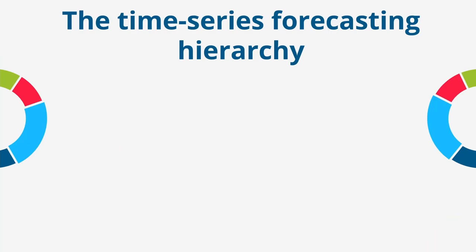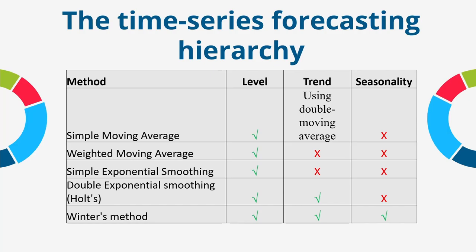Before starting, let's discuss the hierarchy of forecasting methods we have already learned. We have covered simple moving average, weighted moving average, simple exponential smoothing, double exponential smoothing, and today we will see Winter's method. As you can see in this table, simple moving average can only take care of level, not trend. Double moving average handles trend, but seasonality cannot be taken care of by simple moving average. Weighted moving average is also the same — it handles level but not trend or seasonality.